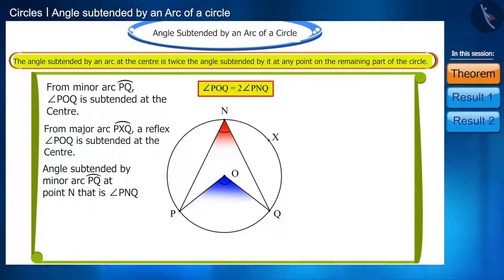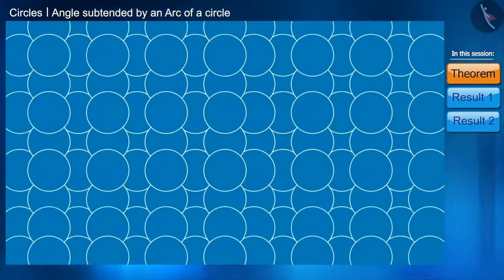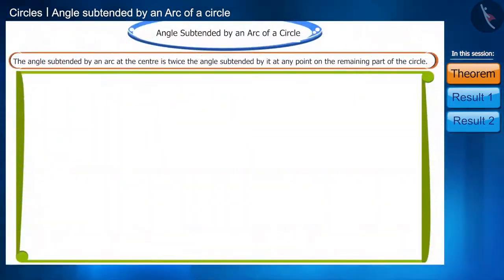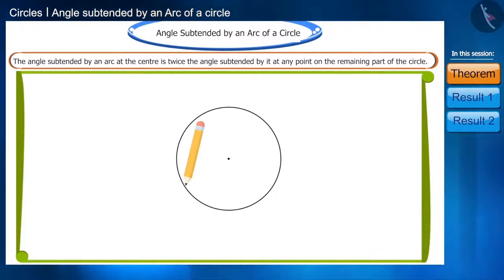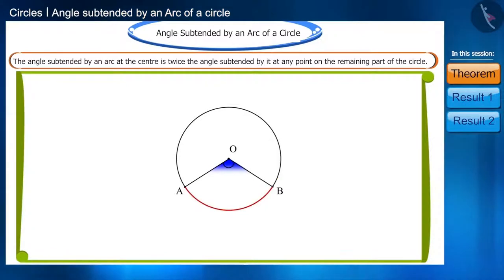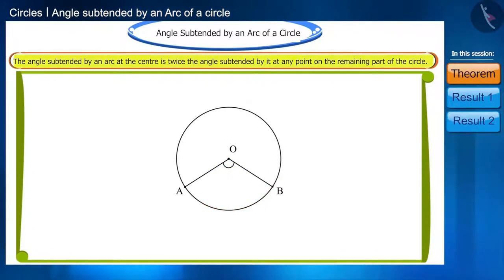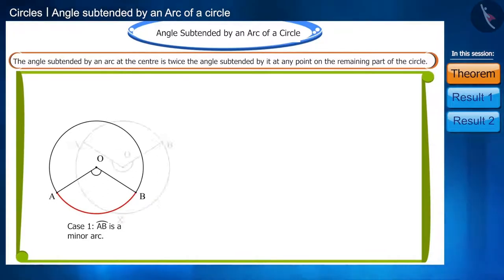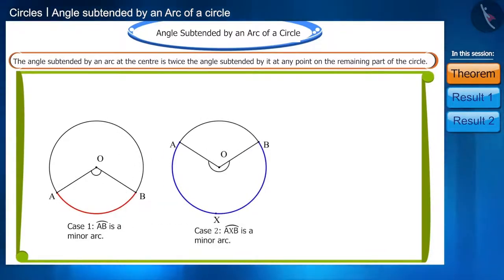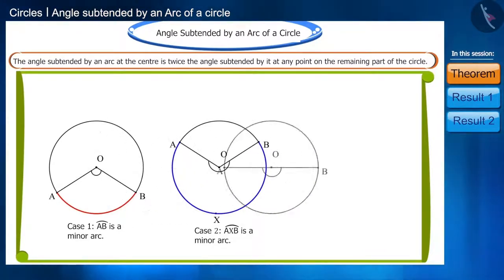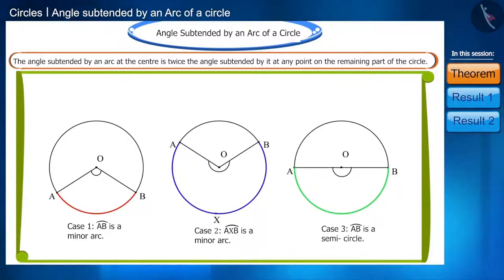Friends, let's prove this theorem. Draw an arc AB on a circle. Here, angle AOB is the angle subtended at the center O by the arc AB. According to the theorem, three cases can occur: AB can be a minor arc, it can be a major arc, and it can also be a semicircle.